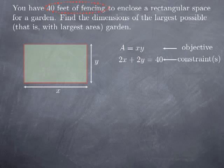So the quantity I want to maximize is usually going to be called the objective function. In some problems, we want to minimize the objective function. And then I have a constraint — in this case, that the perimeter of the rectangle, 2x plus 2y, must be 40. This is a problem that doesn't really require calculus to be solved, because once you formulate it, you maximize A = xy under the constraint that 2x plus 2y is 40.